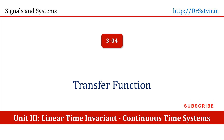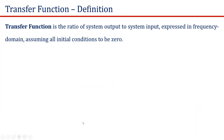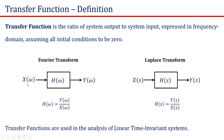Transfer function is a mathematical expression used in the analysis and modeling of linear time-invariant systems. By definition, a transfer function is a ratio of system output to the system input expressed in the frequency domain, assuming all initial conditions to be zero. Let us assume X(ω) is the Fourier transform of the input signal and Y(ω) is the Fourier transform of the output signal. By definition, the transfer function H(ω) is equal to Y(ω) divided by X(ω).